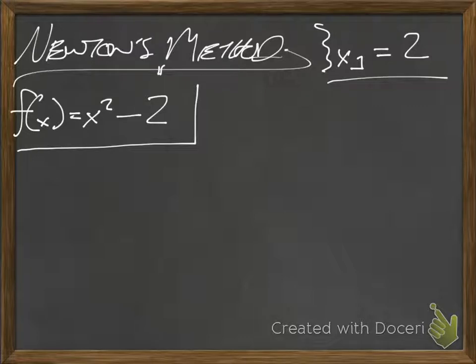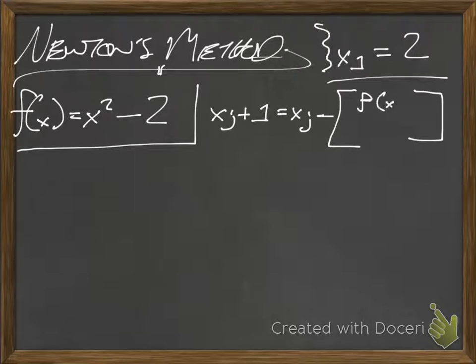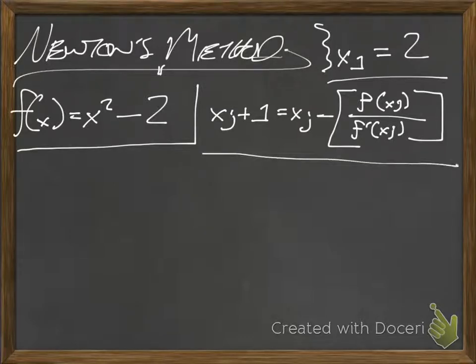So what do we need to do? Well, let's first recall the formula for Newton's method, which is x_{i+1} = x_i - f(x_i)/f'(x_i). All right, so let's get started.